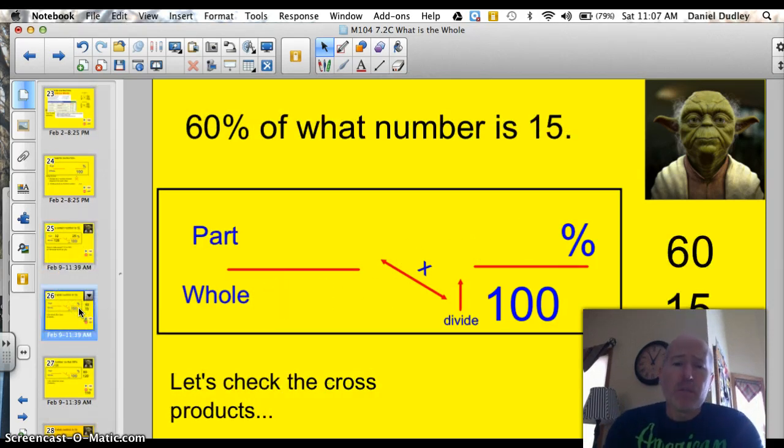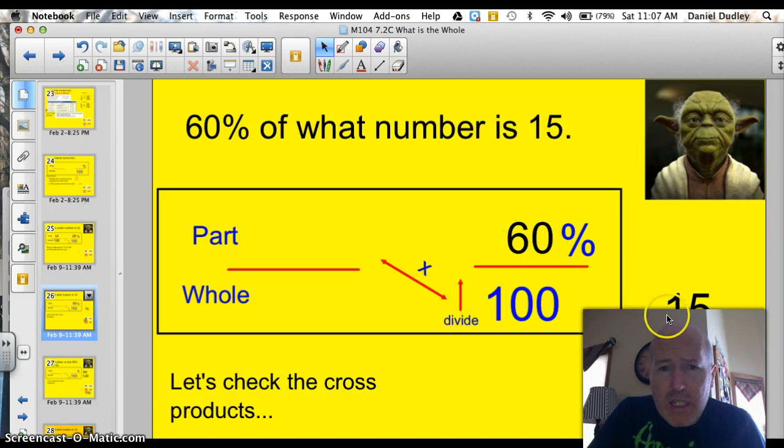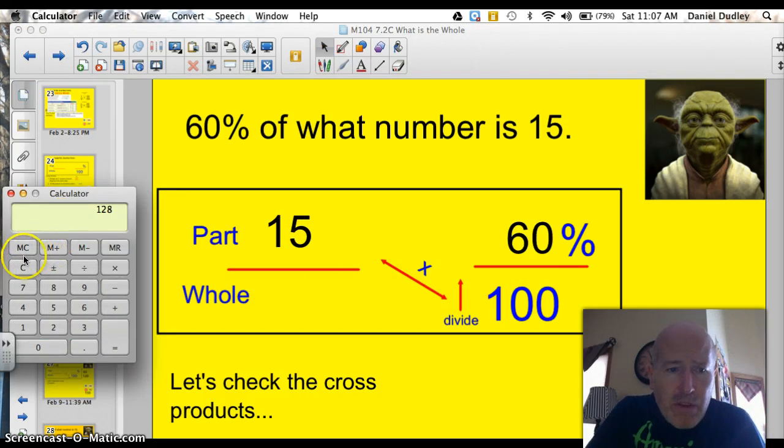The next problem. 60% of what number is 15? Let's see. Use the box and the Jedi you will be. That's right. So we know 60%. Let's pop that into the percent, and then 15. That's the part. So once again, I know that 15 times 100 is just going to be 1500, so I'm just going to pop 1500 in and shorten up my work a little bit. And I'm going to divide that by the third number, which is 60%. Divide by 60, and I get 25.